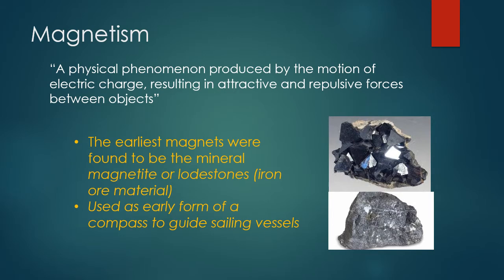Since we're talking about magnetism, let's see how magnetism and electricity are related. Magnetism is a physical phenomenon produced by the motion of electric charge, and it also has attractive and repulsive forces between objects. The earliest magnets were found to be the mineral magnetite, or lodestone — an iron ore material with natural magnetic properties. They were actually used as a compass to guide early sailing vessels, since they have magnetic properties and can point in a specific direction.